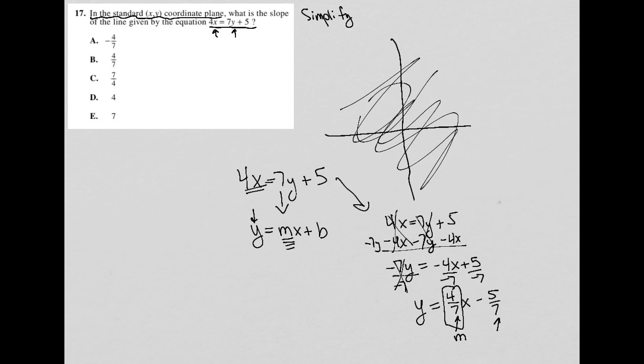And therefore, I now have isolated or can now determine the M value or determine the slope to be 4/7ths, which means my answer is choice B.